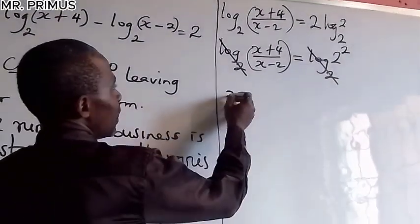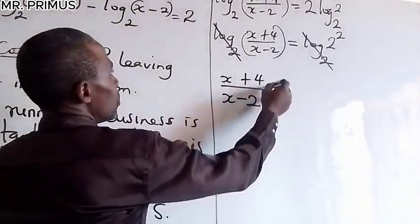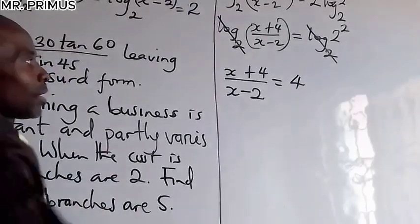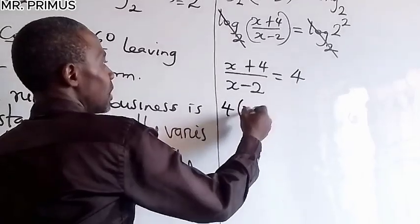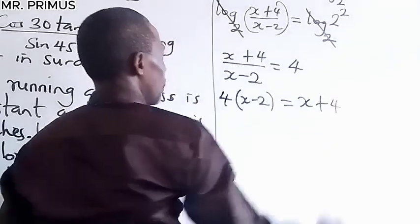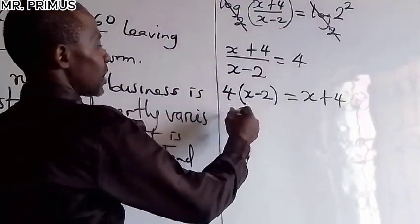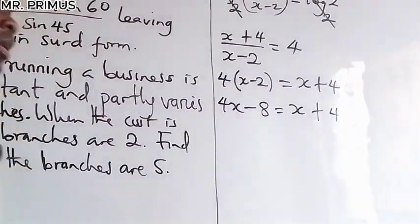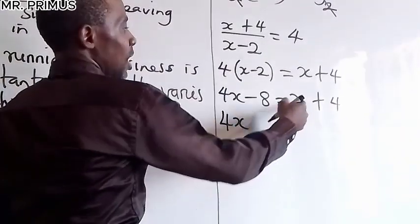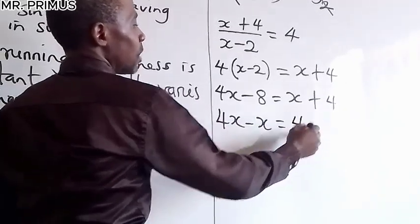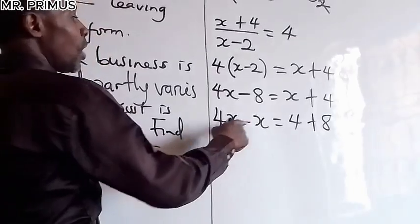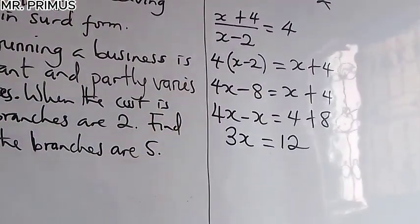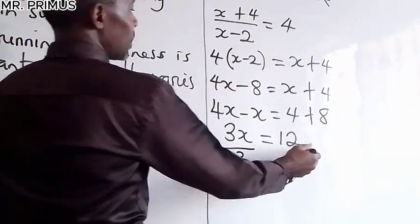We now have (x + 4) / (x − 2) = 2 squared = 4. Cross-multiplying: 4 times (x − 2) equals x + 4. Expanding: 4x − 8 = x + 4. Collecting like terms: 4x − x = 4 + 8, so 3x = 12.